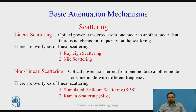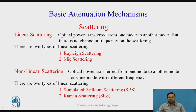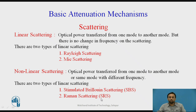Scattering is divided into two types: linear scattering and non-linear scattering. In linear scattering, optical power is transferred from one mode to another with no change in frequency. There are two types of linear scattering: Rayleigh scattering and Mie scattering. In non-linear scattering, power is transferred from one mode to another with a change in frequency. The two types of non-linear scattering are Stimulated Brillouin Scattering (SBS) and Stimulated Raman Scattering (SRS).